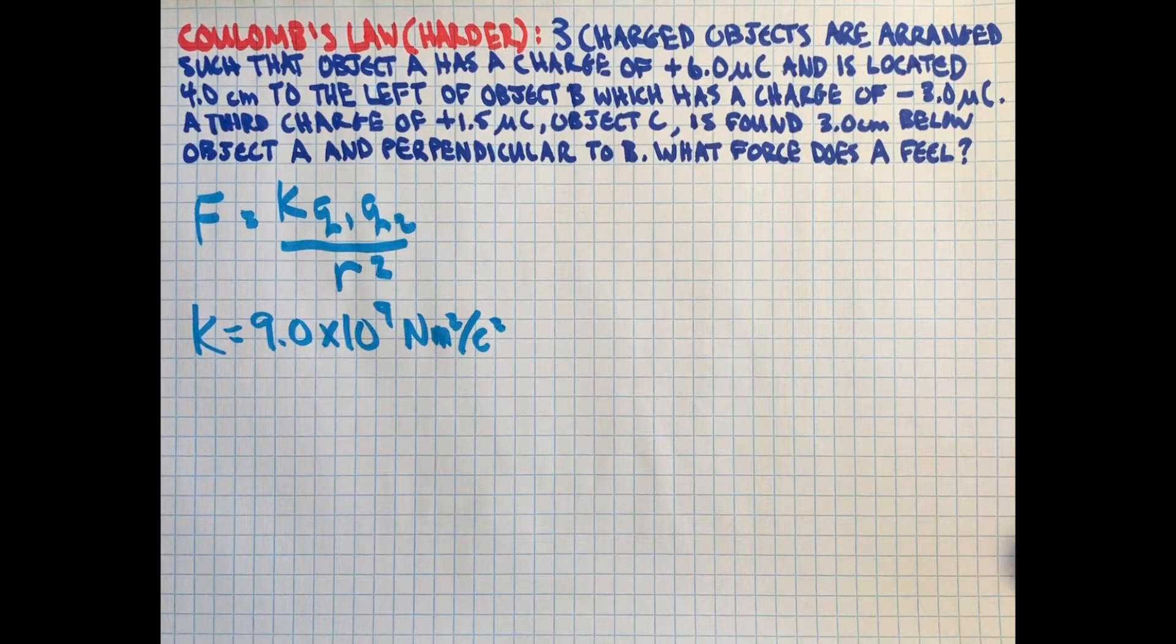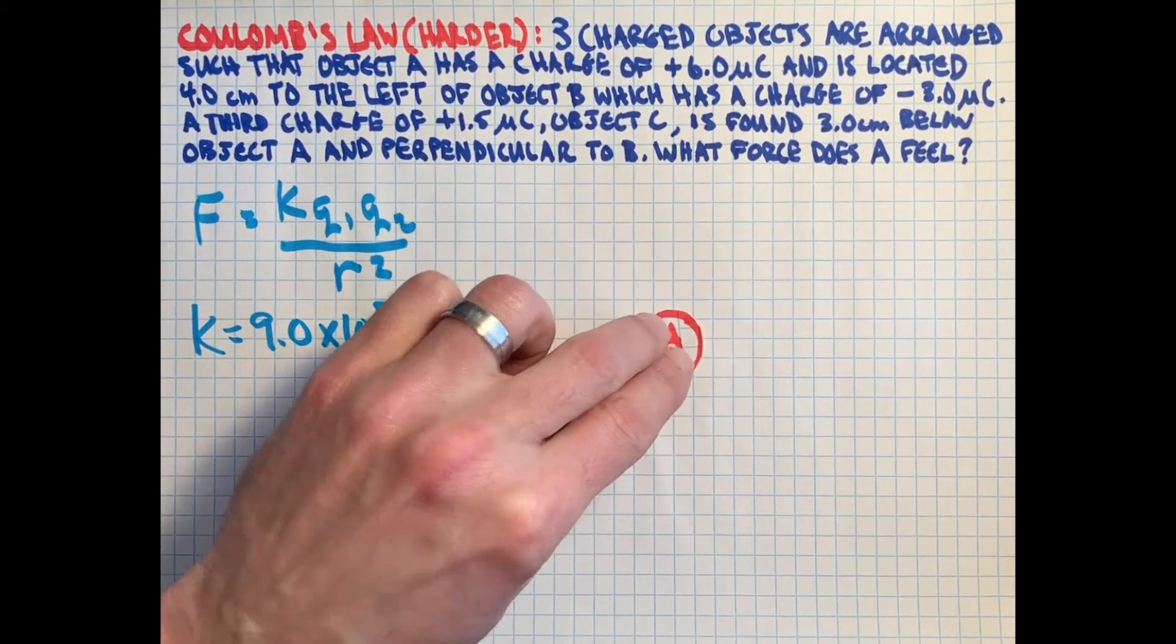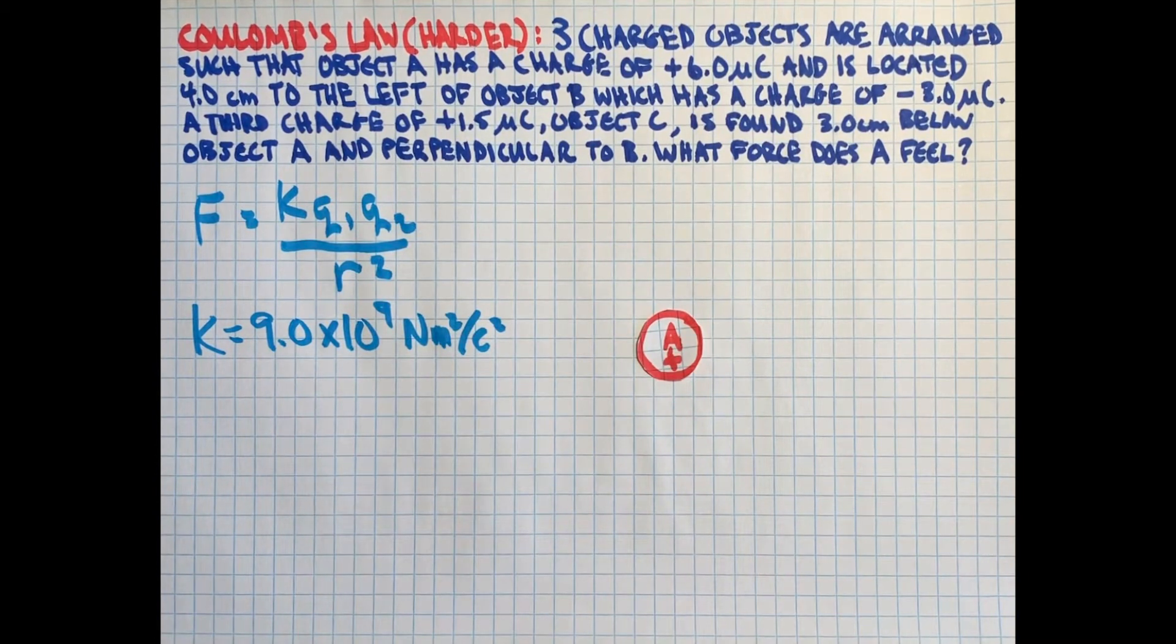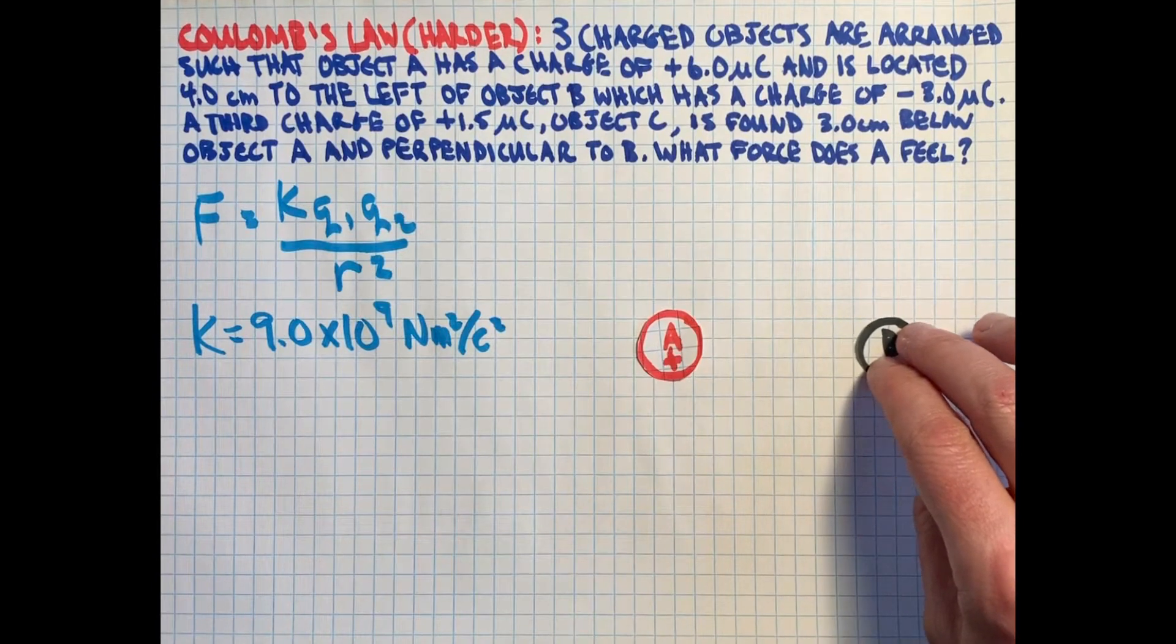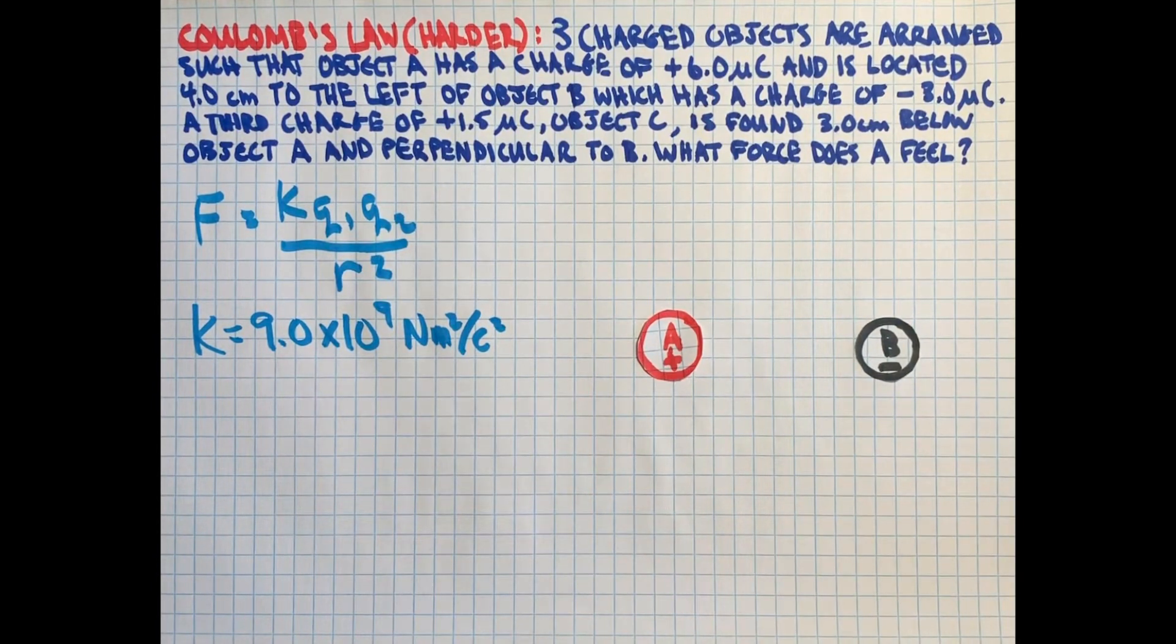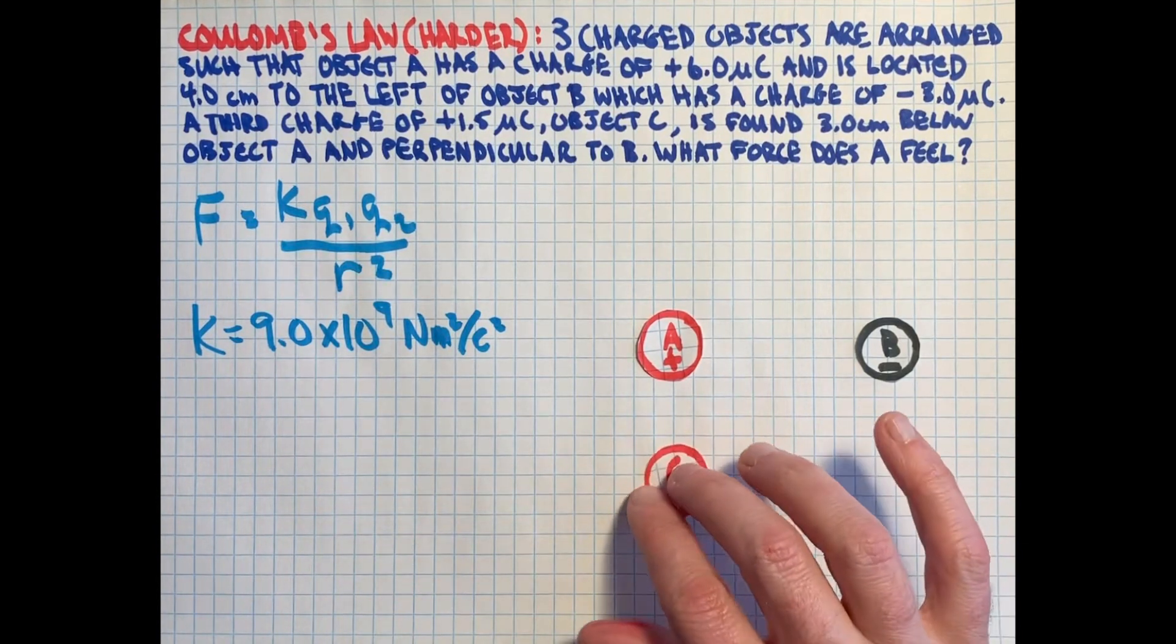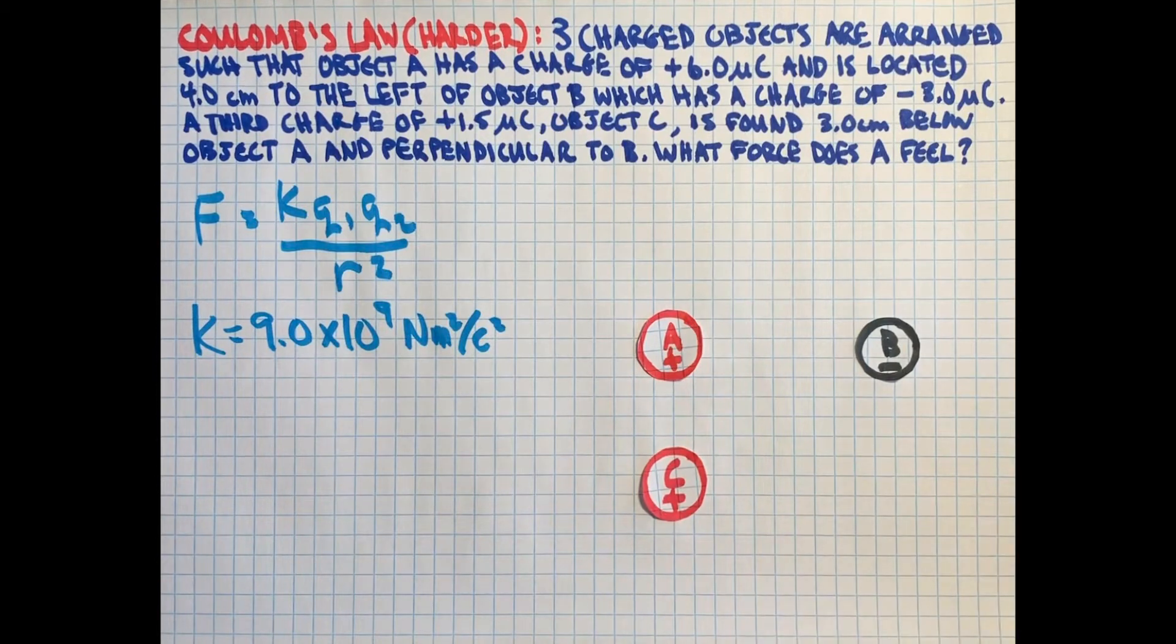So let's take a look at the setup. We have object A, and it says it's four centimeters to the left of object B, which is a negative object, so I'm denoting it that way. That's more than four centimeters, but that's okay, this is just a representation. And then says three centimeters below, so a little bit closer, is object C. So that's the arrangement here.